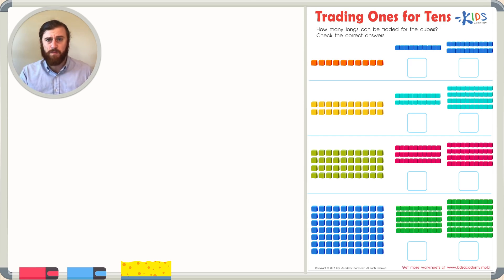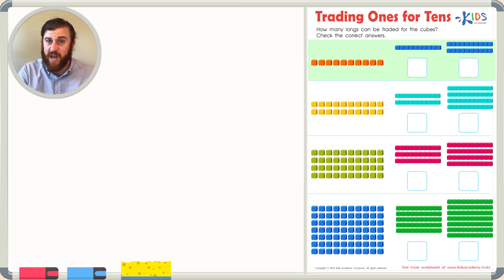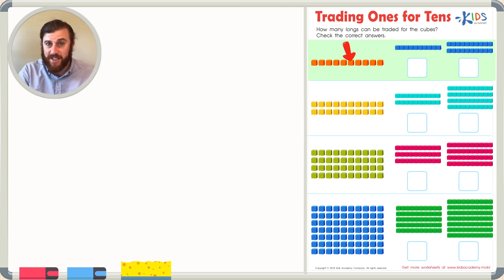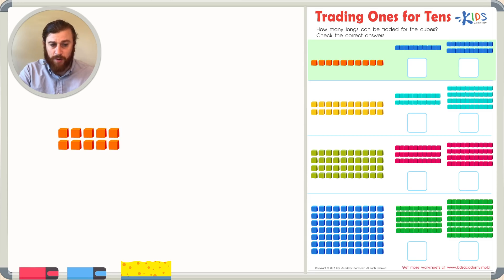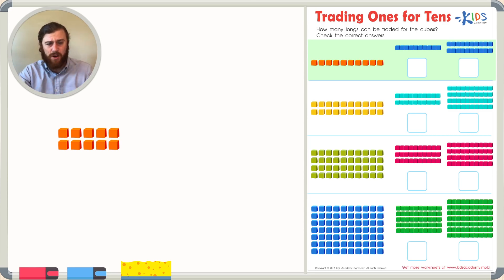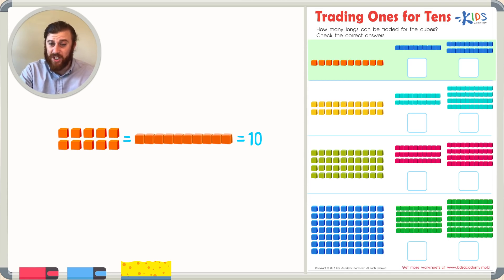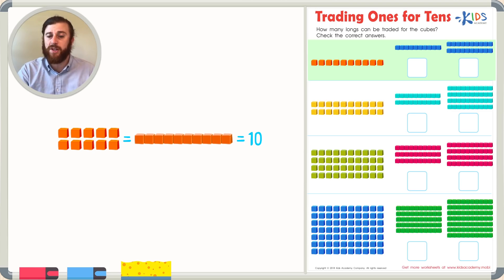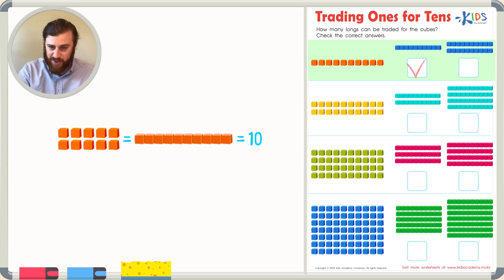In each question, the first thing we need to do is count the cubes. In the first example, I see orange cubes. Let's count them: one, two, three, four, five, six, seven, eight, nine, and ten cubes. If we put those 10 cubes together, we get one long — because inside one long there are 10 cubes. So I need to find the answer choice that shows one long, and that's our first answer choice.